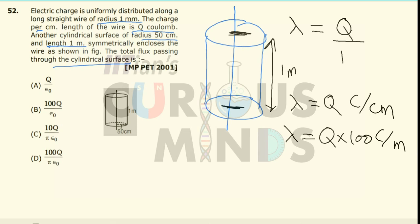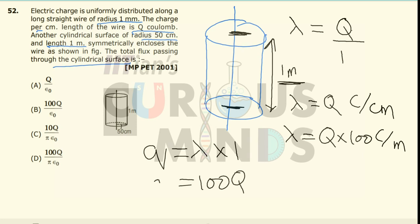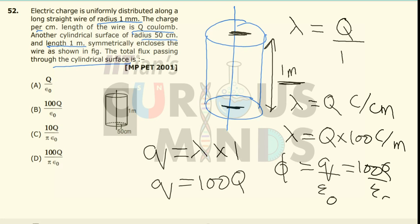The total charge q enclosed in one meter will be equal to lambda × 1, which equals 100q. Since we need to find the flux, the total flux through any surface equals charge divided by epsilon naught, which is equal to 100q divided by epsilon naught. This corresponds to option number B.